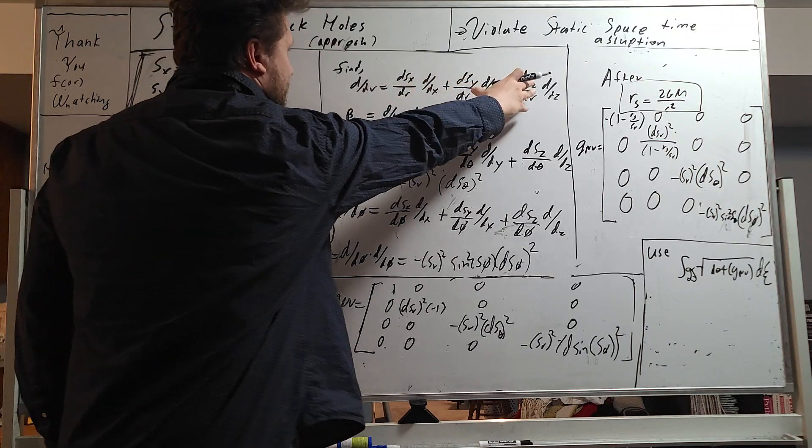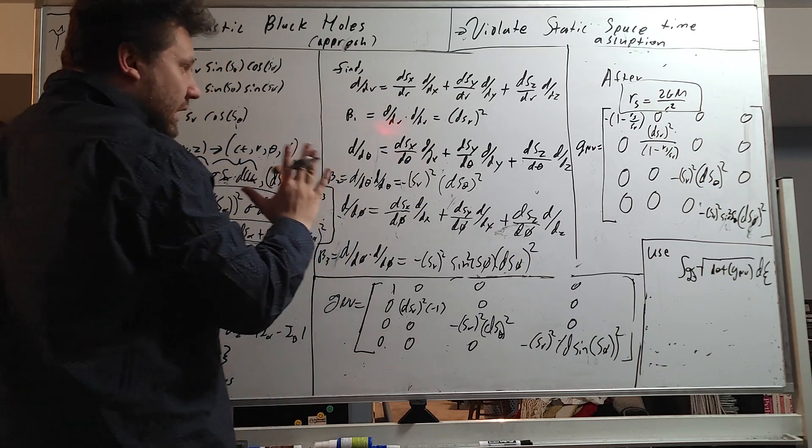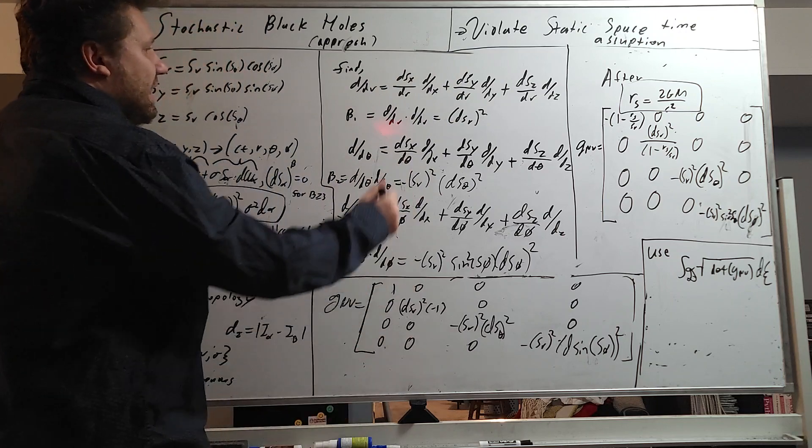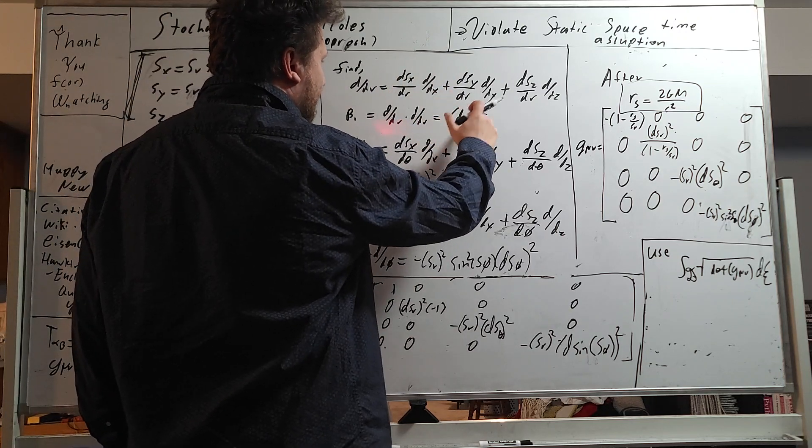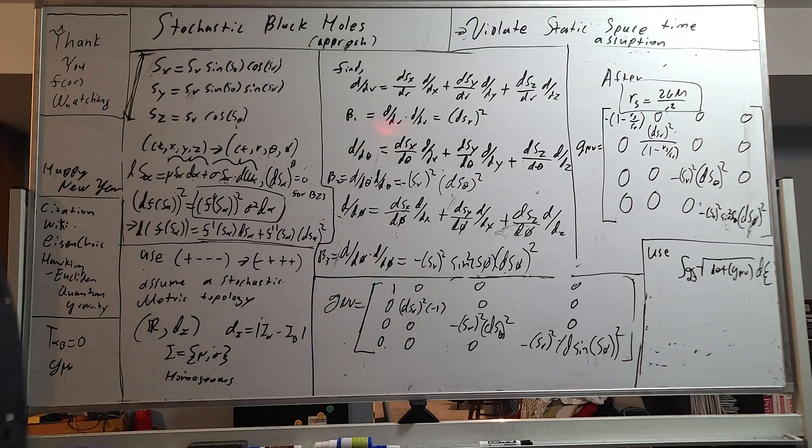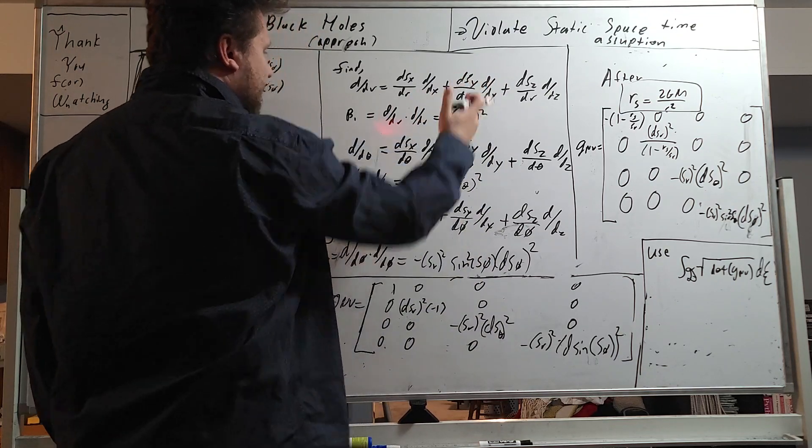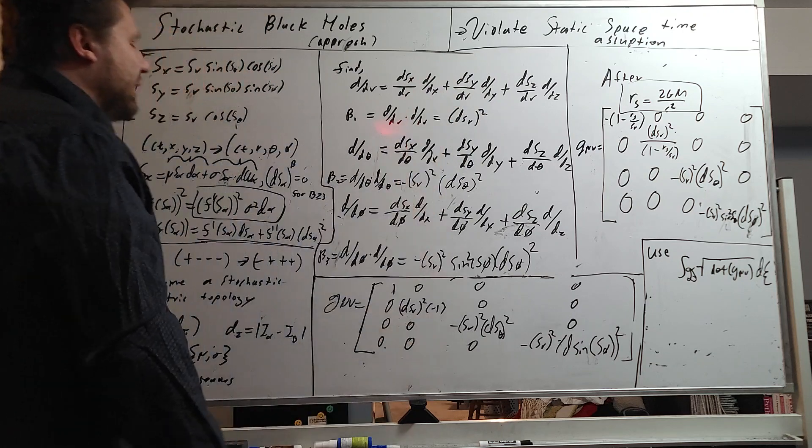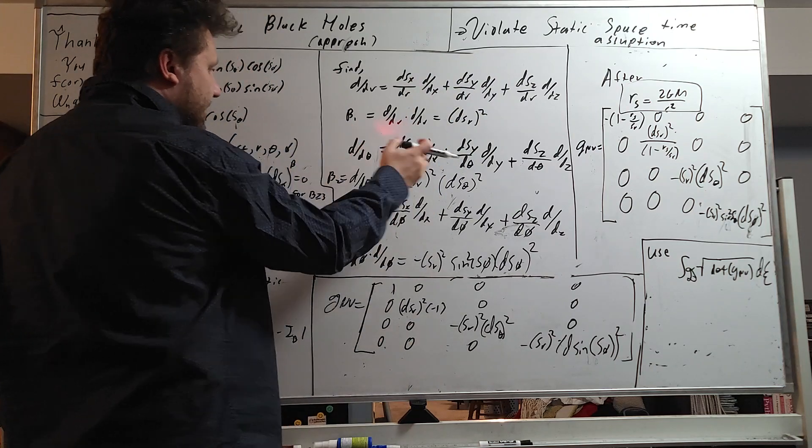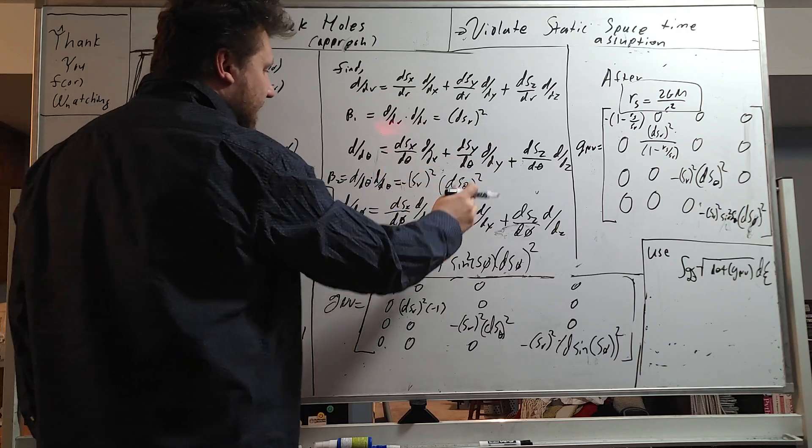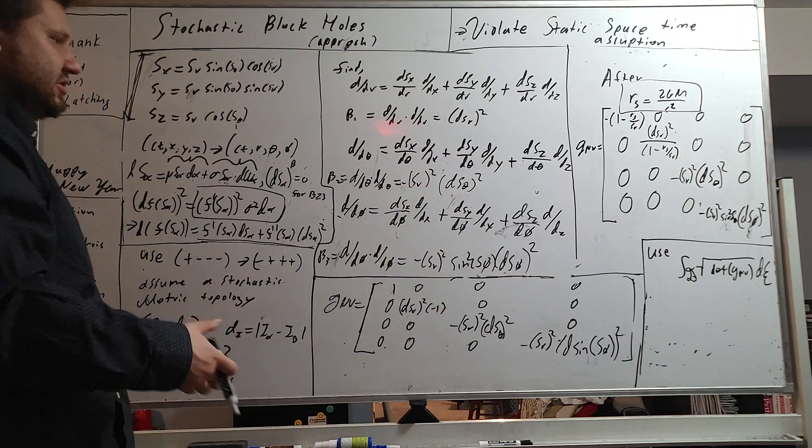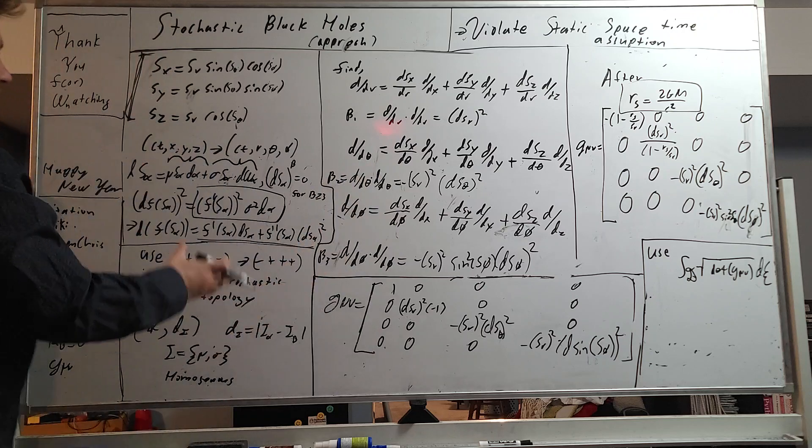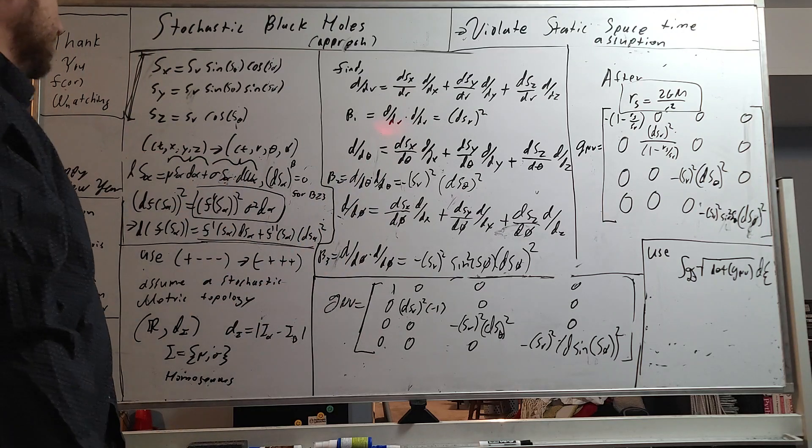So, we take the ddr, for example, the derivative with respect to r component, the radius. And then what we're going to do is we're going to get this solution, and we're going to dot product it. Not square, but dot product. So, each component is going to be squared. And what we get is dsr squared. So, this is the stochastic process with respect to the radius squared. And then we're going to do it for all the other ones as well. We get dd theta. We do the dot product. And this is what we get.